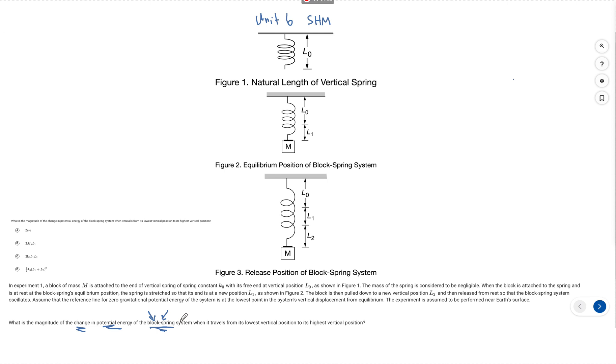What is the magnitude of the change in potential energy in the block spring system, which is very important. This phrase is really the cause of all the debate. If people would look at this phrase, block spring system itself, then it would be the end of the day. When it travels from its lowest vertical position to the highest vertical position, and that's going to be our range of oscillation.